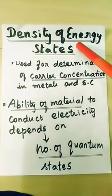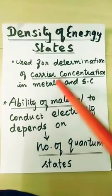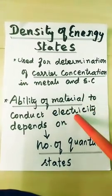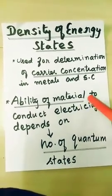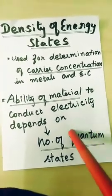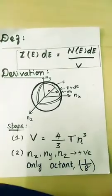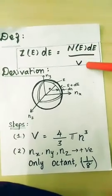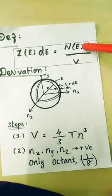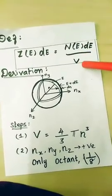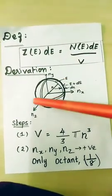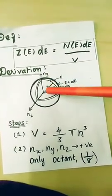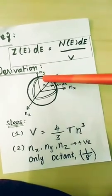Density of energy states — once again we will recall. Carrier concentration is the number of energy states from E to E plus dE. Derivation: consider one coordinate axis with quantum numbers, radius N, outer N, inner energy E, and outer energy E plus dE.